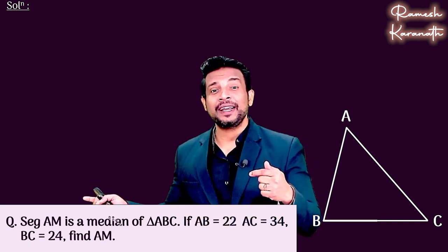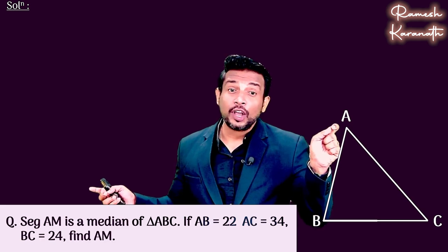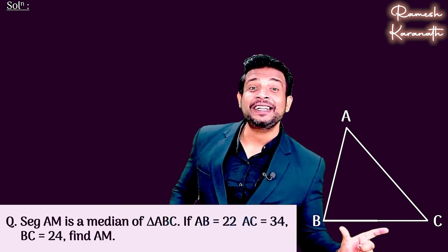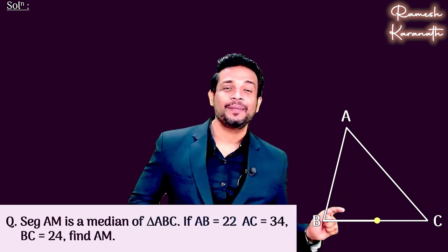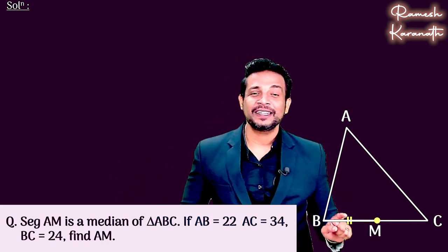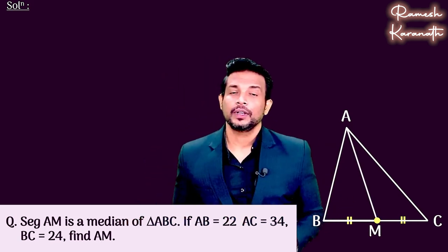That means AM is a median, and we know it is vertex of the triangle. So here on the opposite side BC, we have to join the midpoint. That means M is the midpoint of BC, so BM and CM are equal. When we join, this becomes a median.